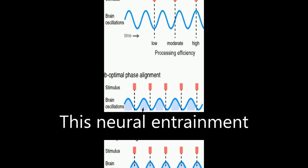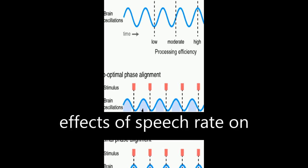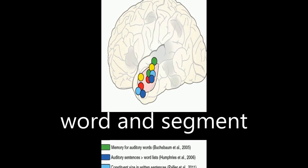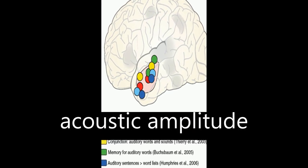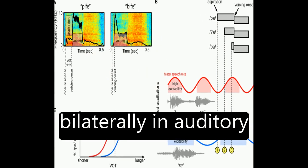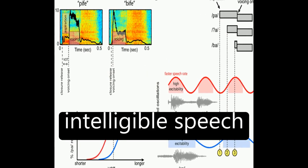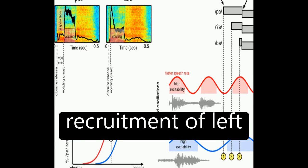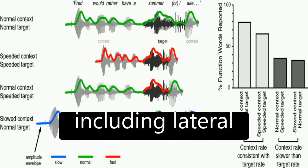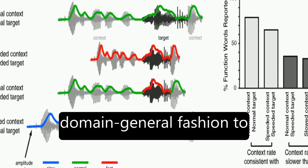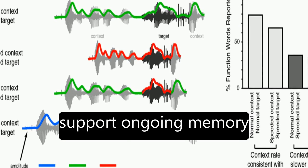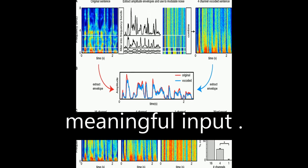This neural entrainment to speech rhythm explains effects of speech rate on word and segment perception. The article suggests that acoustic amplitude modulations are processed bilaterally in auditory cortex, with intelligible speech resulting in additional recruitment of left hemisphere regions, including lateral anterior temporal cortex, which functions in a domain-general fashion to support ongoing memory and integration of meaningful input.